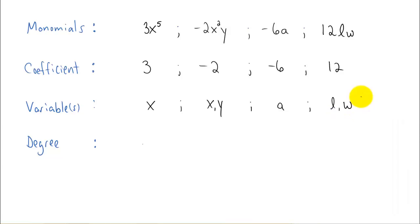Now degree, this is probably a new word to you. The degree of a term is the sum of the powers on the variables. So in this first example, the only power on the variable is five. So the degree is five.